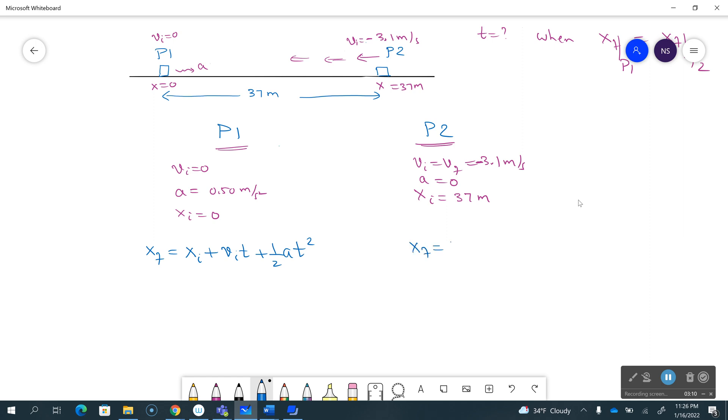Player one, xi is zero and vi is also zero starting from rest. And player two, acceleration is zero. And we want these two positions to be the same.